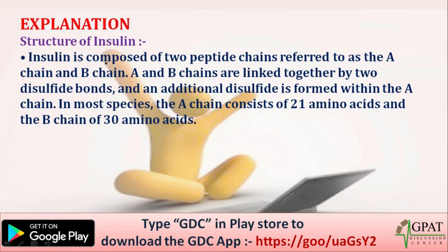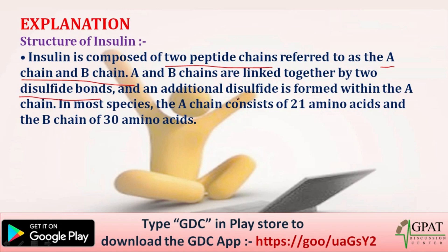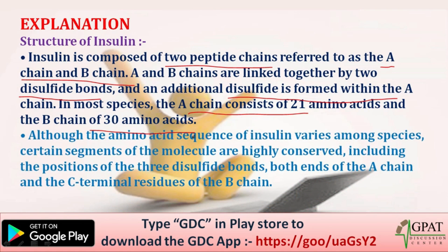The structure of insulin is composed of two peptide chains — chain A and chain B. They are linked by two disulfide bonds, and an additional disulfide bond is formed within the chain. Chain A consists of 21 amino acids, while chain B consists of 30 amino acids.